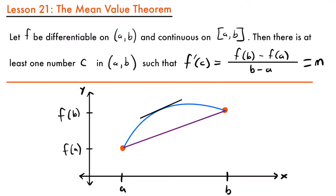What the mean value theorem says is this is always going to happen. No matter what kind of line we draw to connect these two points, given that it represents a continuous and differentiable function, we are going to have at least one point where the slope is the same as the slope between these two points. If you just draw a line between them, every point has that same slope. But if you connect them in any other way, such as with an arc, there is going to be at least one point with that same slope between those two endpoints. That is what the mean value theorem says.